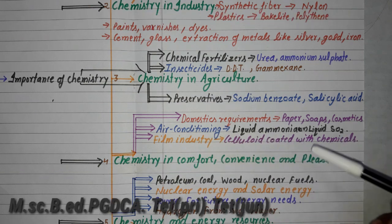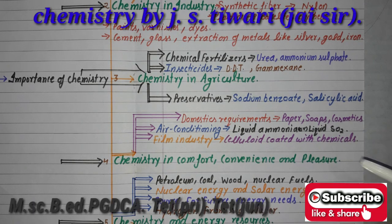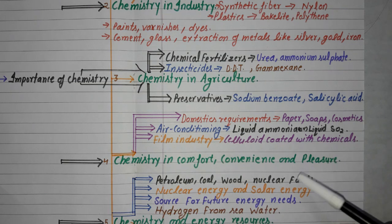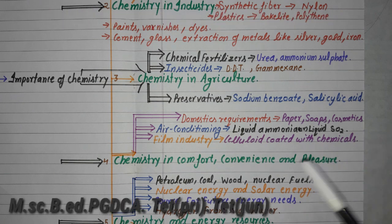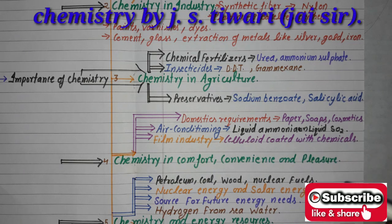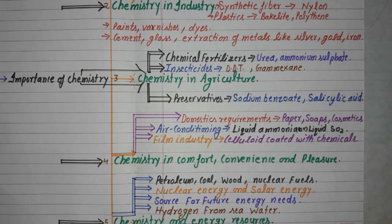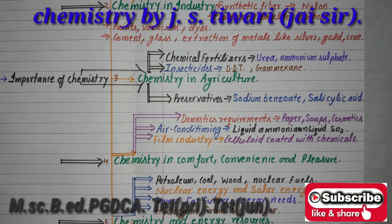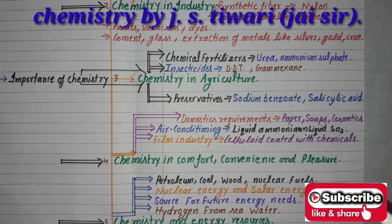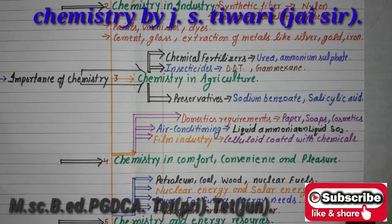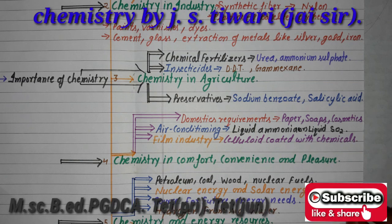Chemistry in comfort, convenience, and pleasure — for domestic requirements, paper is a gift of chemistry. Soap is also a gift of chemistry. Cosmetics — there are many cosmetics, and they too are a gift of chemistry. Air conditioners run on chemicals — liquid ammonia or liquid sulfur dioxide flows through them. In the film industry, reels used to be made from celluloid, the first plastic, and chemicals were applied to it to produce film — that is how chemistry helped the film industry.